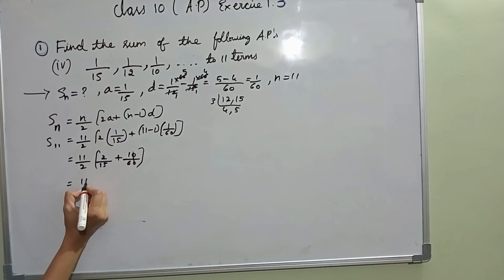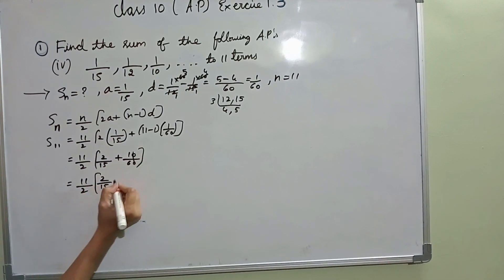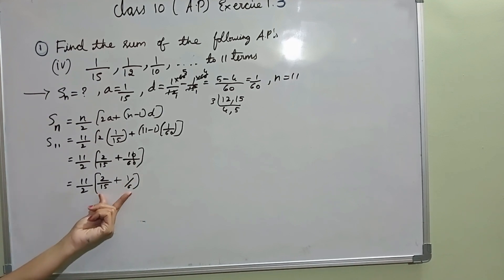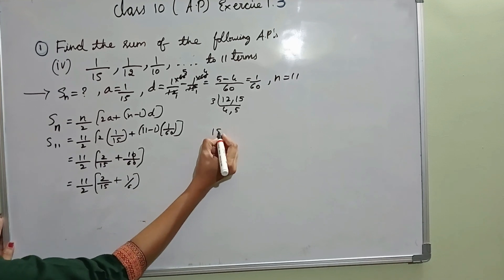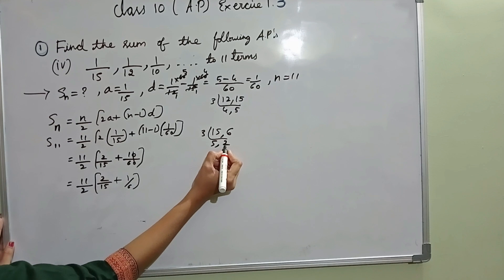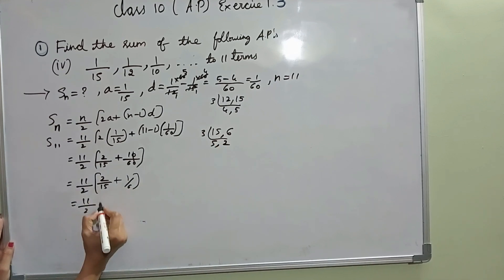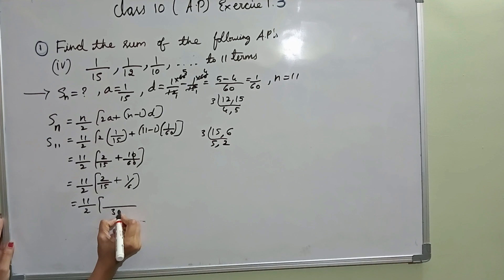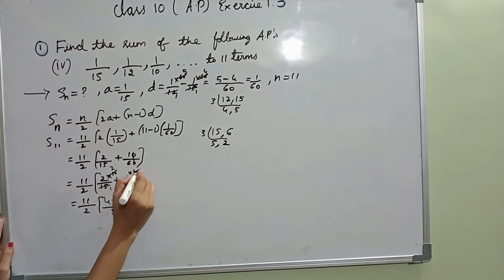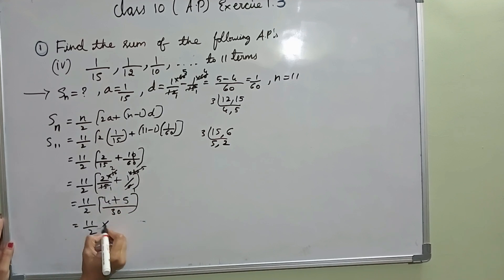The zeros get cancelled in 10 by 60, giving 1 by 6. So we have 11 by 2 into 2 by 15 plus 1 by 6. To add these fractions, we find the LCM of 15 and 6. Both are divisible by 3; LCM is 30. Multiplying: 2 by 15 becomes 4 by 30, and 1 by 6 becomes 5 by 30. So 4 plus 5 is 9 by 30.